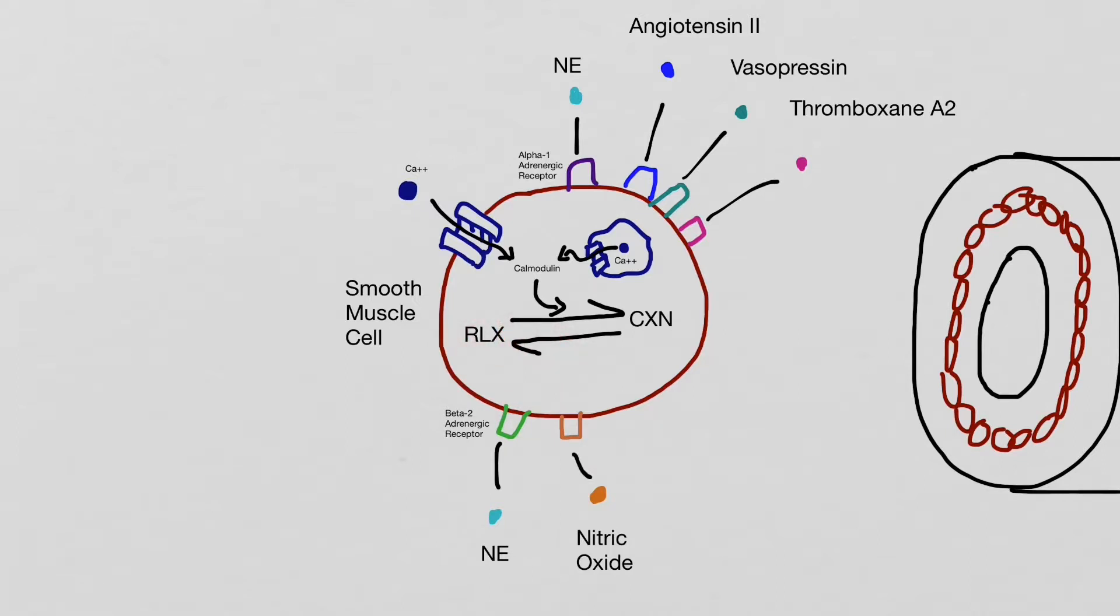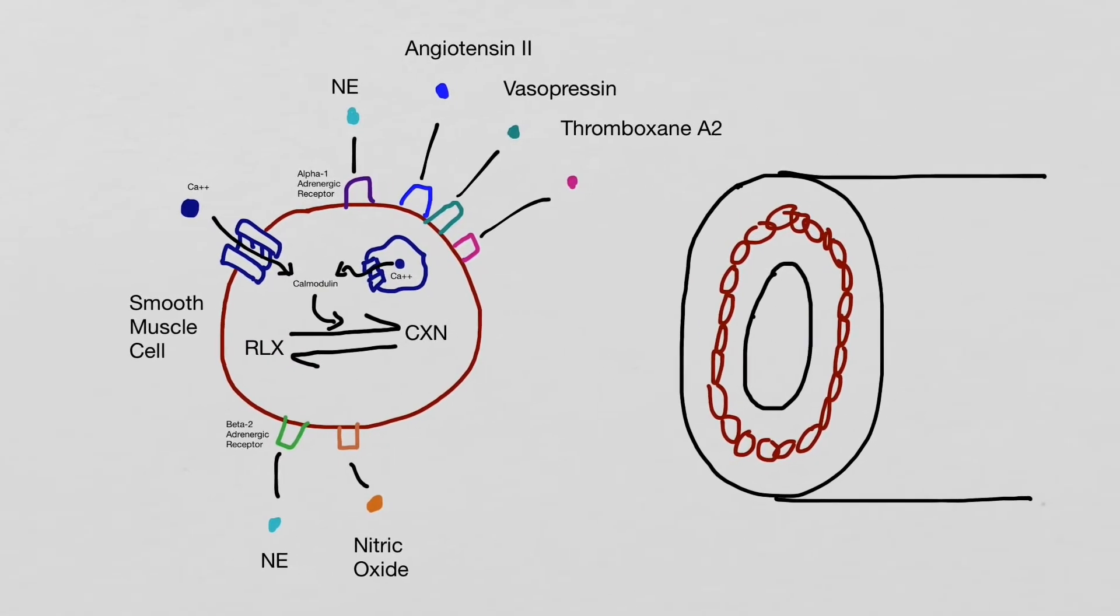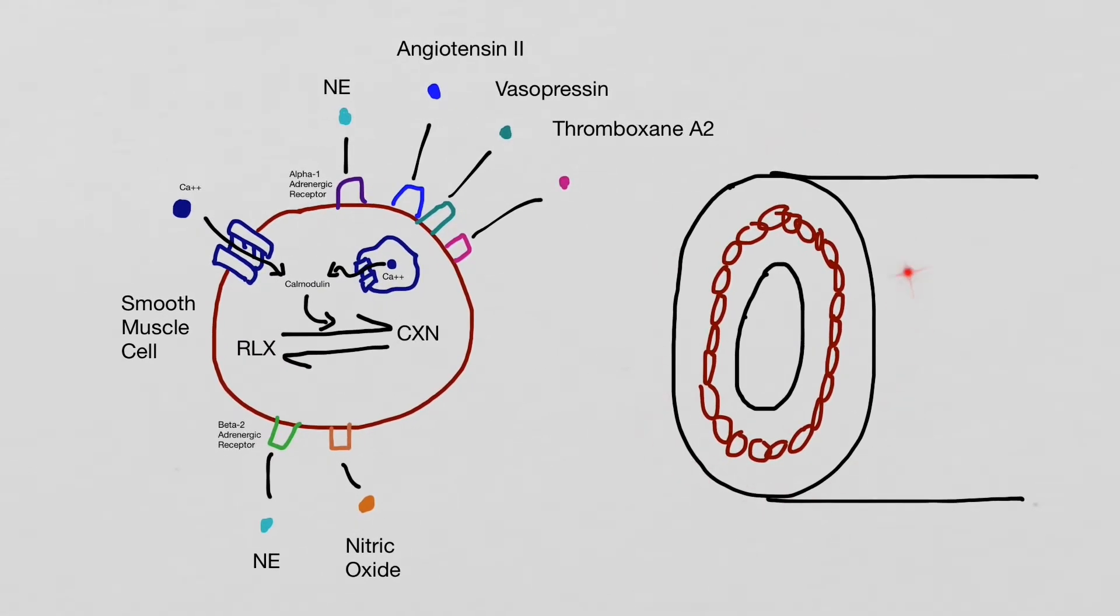Nitric oxide is lipid-soluble and it causes relaxation as well. This diagram represents smooth muscle found within a tube within the body. The tube could be either a blood vessel or an airway.